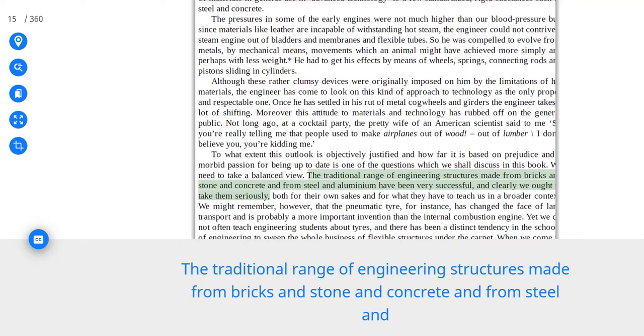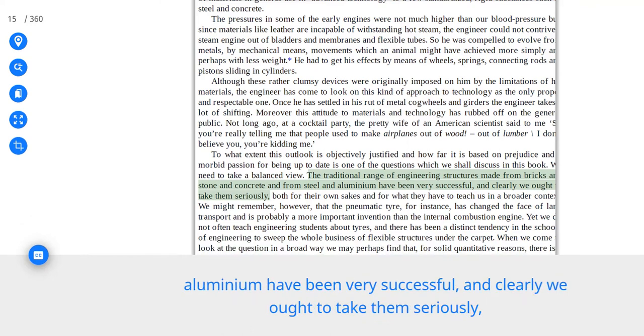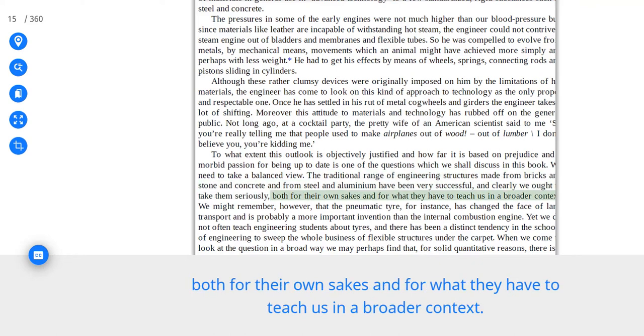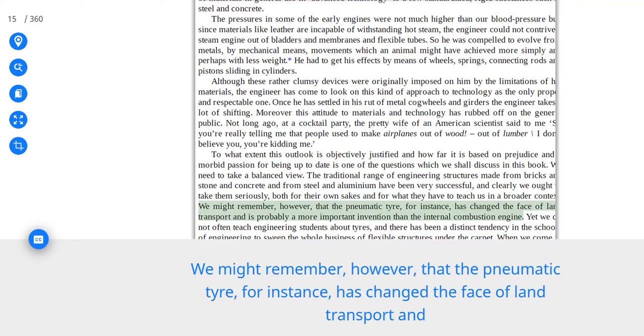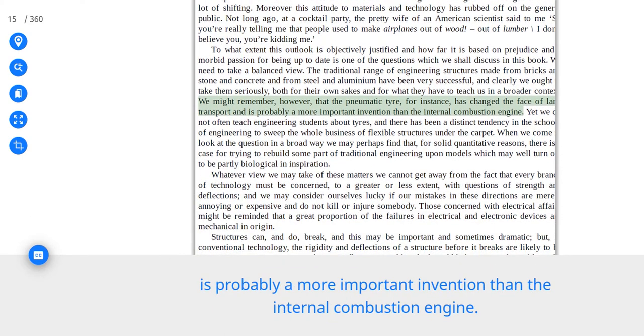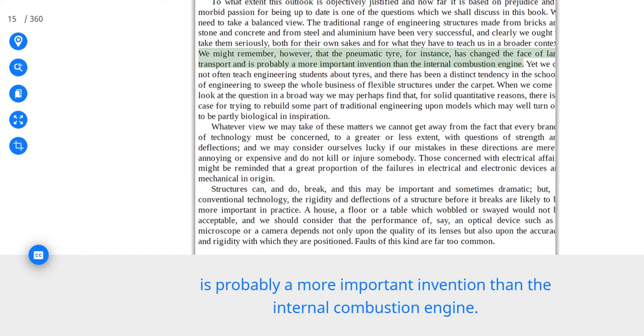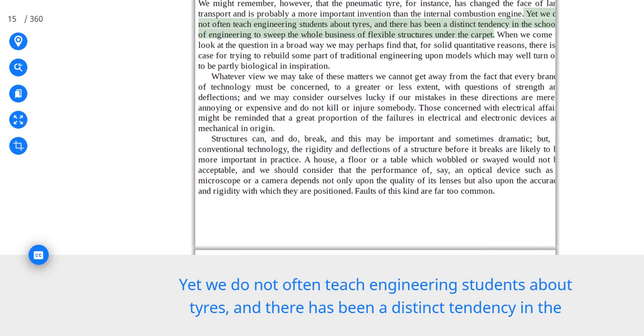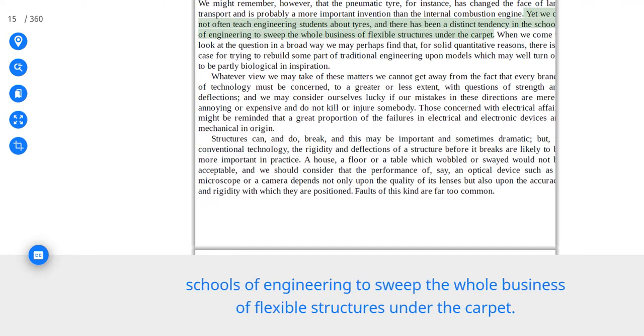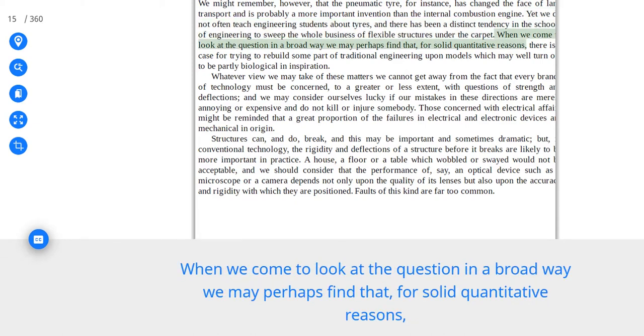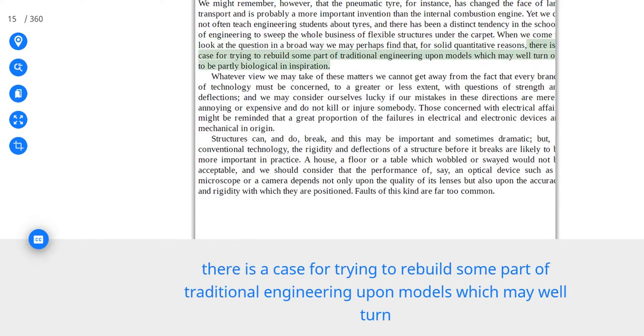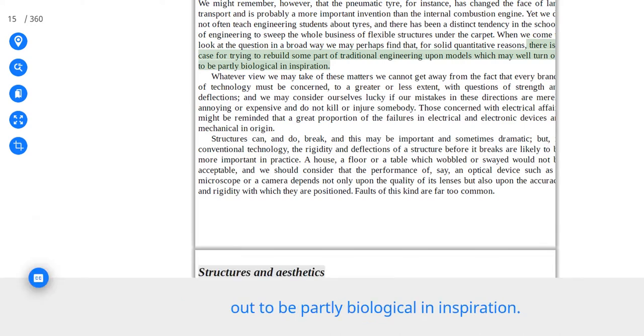The traditional range of engineering structures made from bricks and stone and concrete and from steel and aluminium have been very successful, and clearly we ought to take them seriously. Both for their own sakes and for what they have to teach us in a broader context. We might remember, however, that the pneumatic tire, for instance, has changed the face of land transport and is probably a more important invention than the internal combustion engine. Yet we do not often teach engineering students about tires, and there has been a distinct tendency in the schools of engineering to sweep the whole business of flexible structures under the carpet. When we come to look at the question in a broad way we may perhaps find that, for solid quantitative reasons, there is a case for trying to rebuild some part of traditional engineering upon models which may well turn out to be partly biological in inspiration.